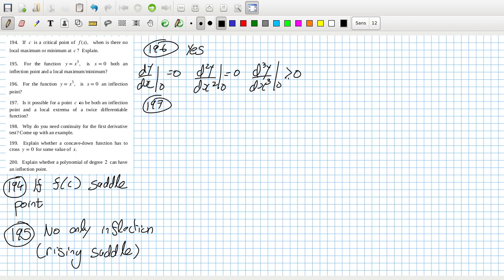197, is it possible for a point C to be both an inflection point and a local extrema of a twice differentiable function? Does local extrema mean max and min? If so, I think the answer is no, because an inflection is concave convex. I think it's a no.